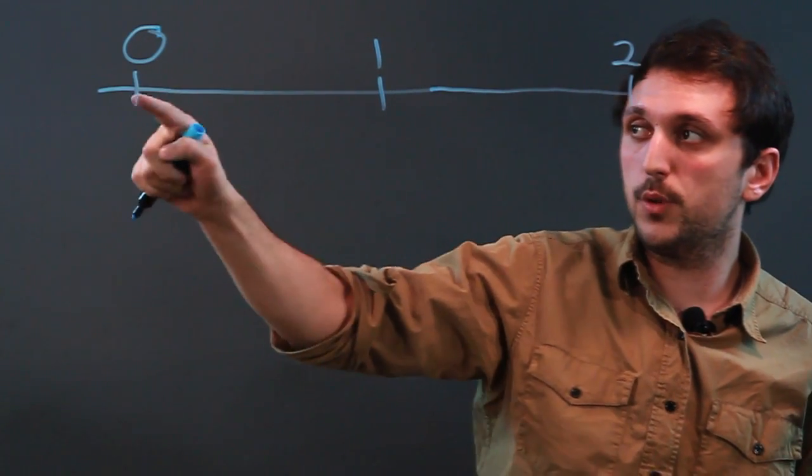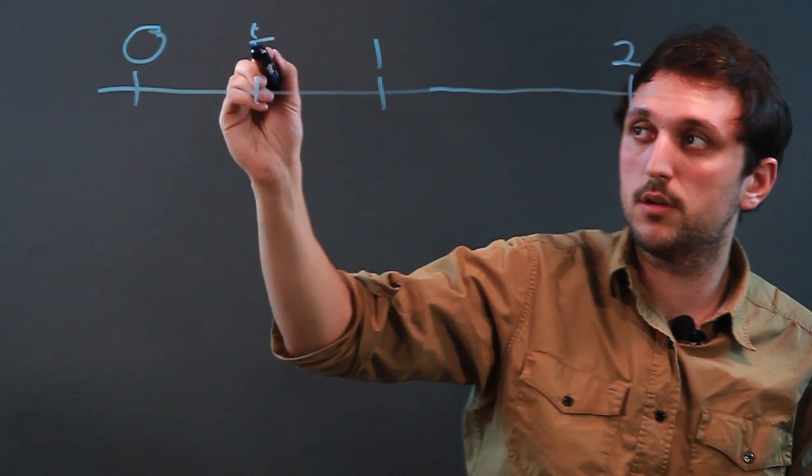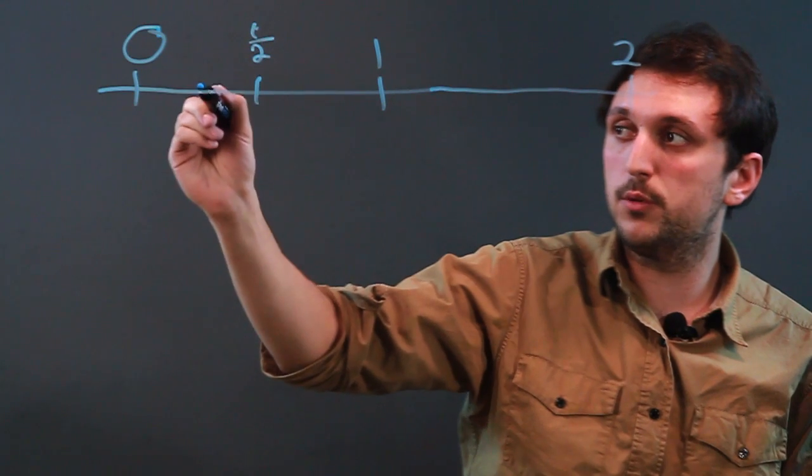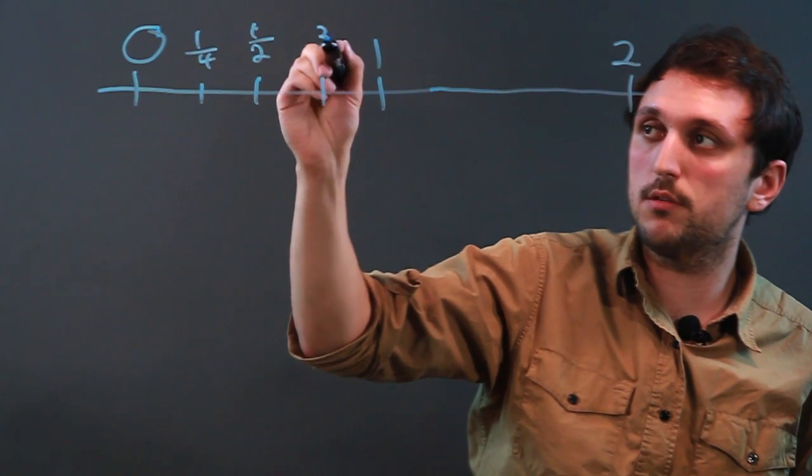And what we do is between zero and one, we figure about halfway. That's going to be one half. And then halfway between these is one fourth. Halfway between these is three fourths.